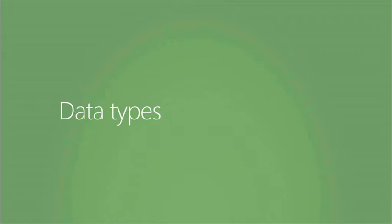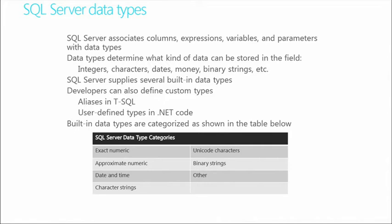Data types fall into seven general categories: exact numeric, approximate numeric, date and time, character strings, Unicode characters, binary strings, and other types. SQL Server supplies several built-in data types within these categories — integers, characters, dates, and binary strings.